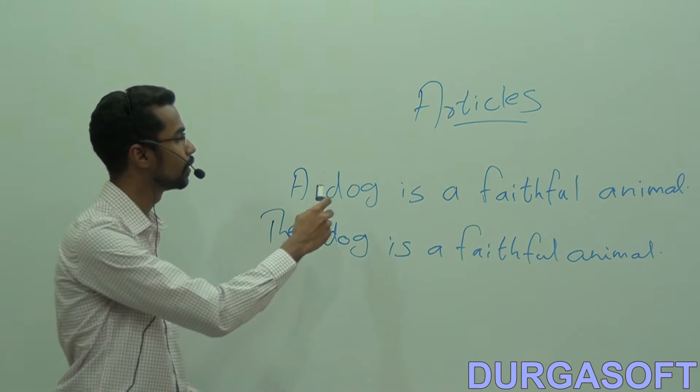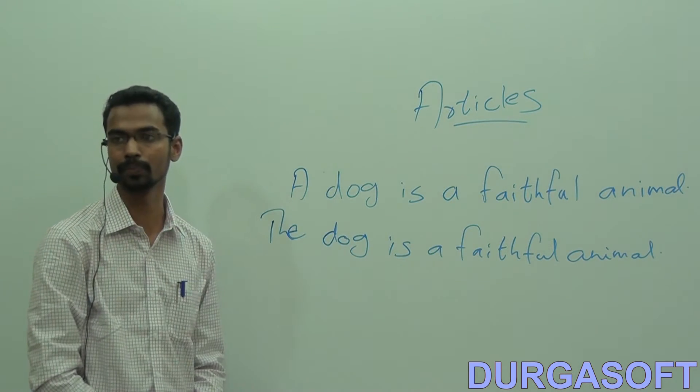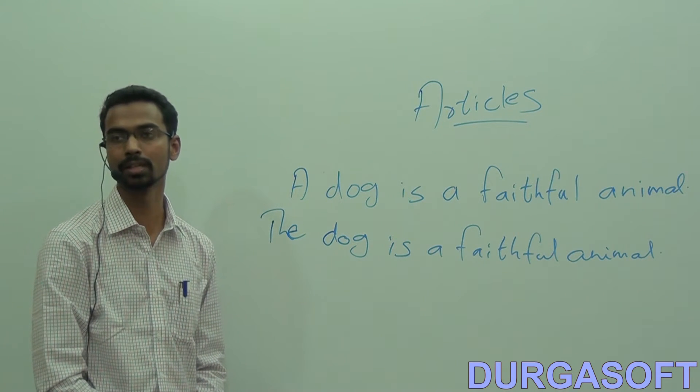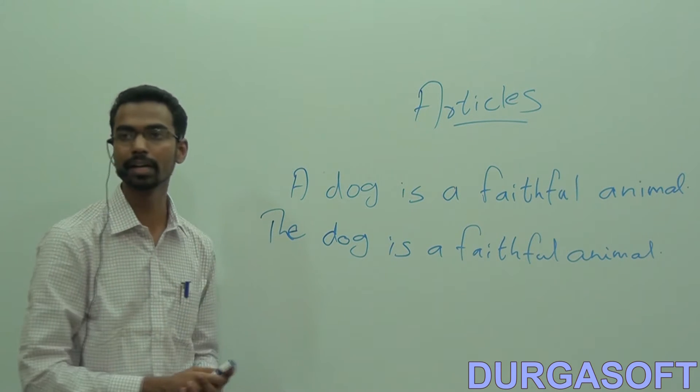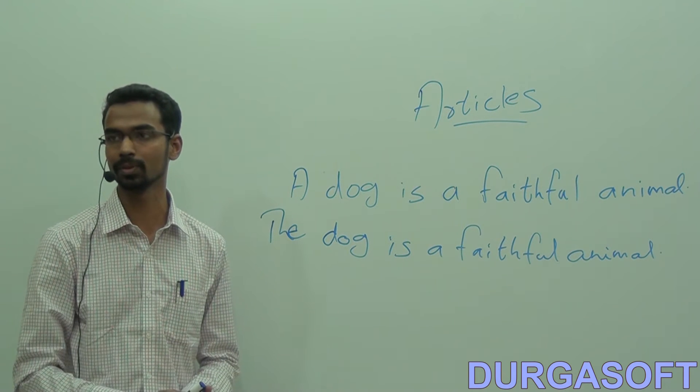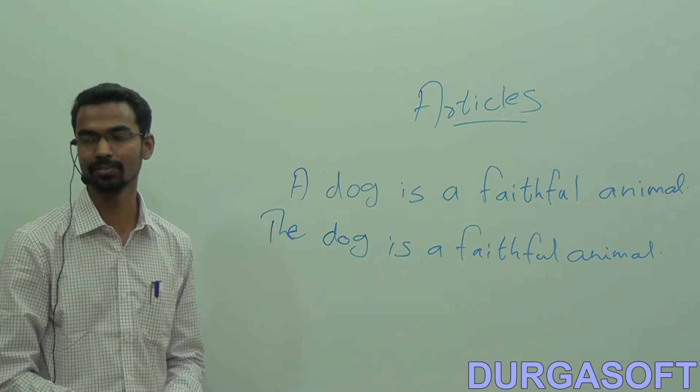Only a subtle difference. In the first one, as I told you, I singled out one dog to be a representative of all the dogs. In the second sentence, I don't do that. I simply say, when I say the dog, it means all the dogs. So that's the difference.